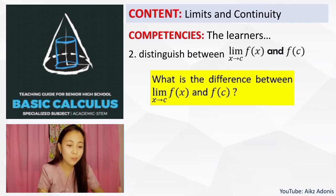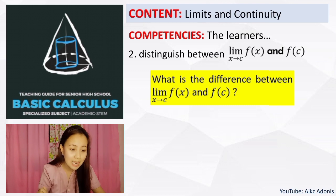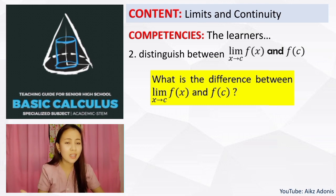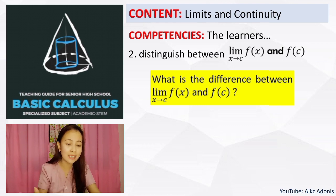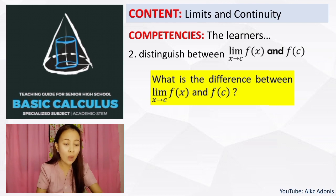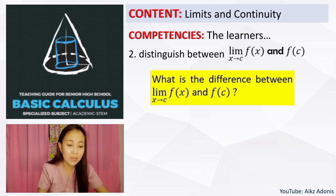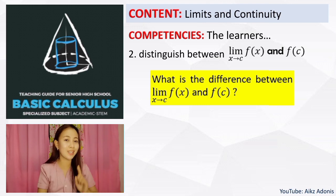Next, distinguish between the limit of f of x as x approaches c and f of c. So what is the difference between f of x as x approaches c and f of c? The limit of f as x approaches c is the limit of a function, while f of c is the function value. So is there a difference between the two? This is your task — search for it.